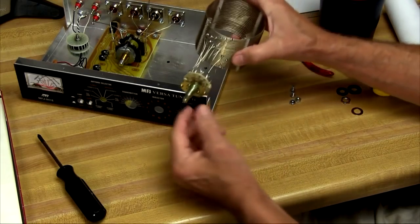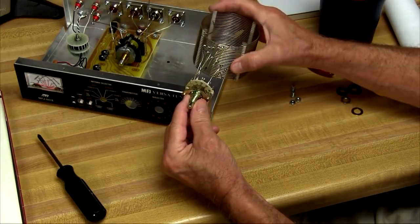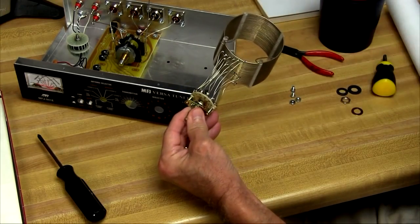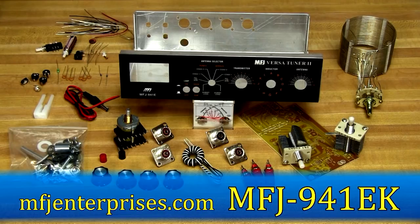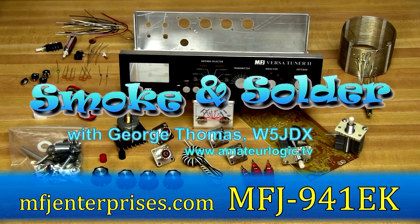This completes the RF switching and meter. Next week we'll return and build the T-Network. If you'd like to build along with us, visit mfjenterprises.com and order MFJ 941-EK.